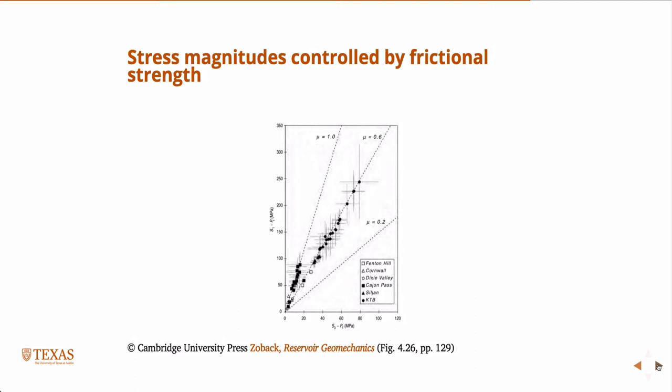So they, for the most part, stack up on this. The crosses are the error bars, so it's not perfect. But for the most part, they stack up on this 0.6 line and seem to indicate that a vast majority of the Earth is bound by this idea that faults are going to slip at some critical stress.